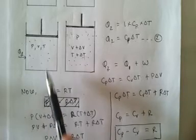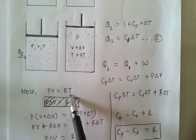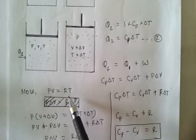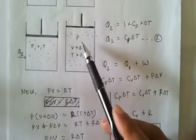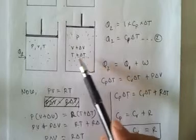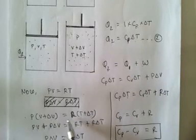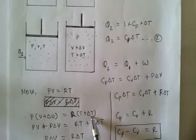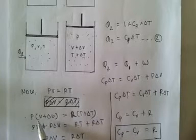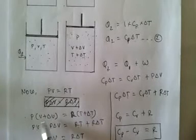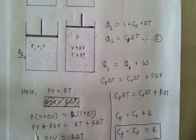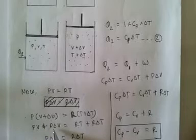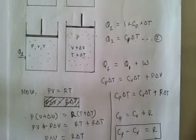For the initial state P, V, T we can write the ideal gas equation for one mole: PV equals RT. For the state P, V plus delta V, T plus delta T we write P times (V plus delta V) equals R times (T plus delta T). Expanding: PV plus P delta V equals RT plus R delta T. Since PV equals RT, those terms cancel, giving us P delta V equals R delta T.